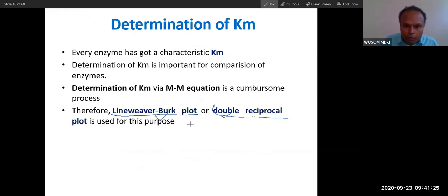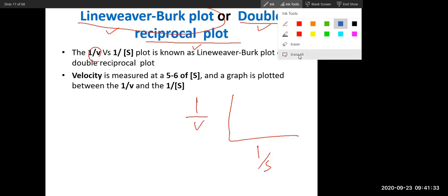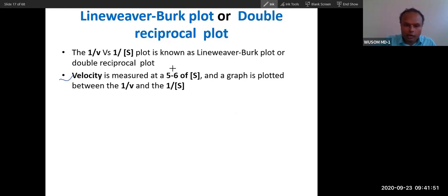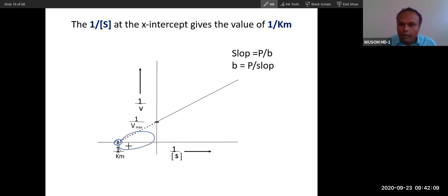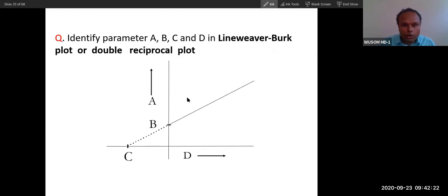To determine Km experimentally: measure five to six substrate concentrations, record corresponding velocities, take reciprocals of both, and plot 1/V vs 1/S. You will get a straight line. If you extend this line, it will strike the X-axis at −1/Km. From that segment, you can measure the Km value and compare Km values of different enzymes through this curve. We will use this Lineweaver-Burk plot again in enzyme inhibition.